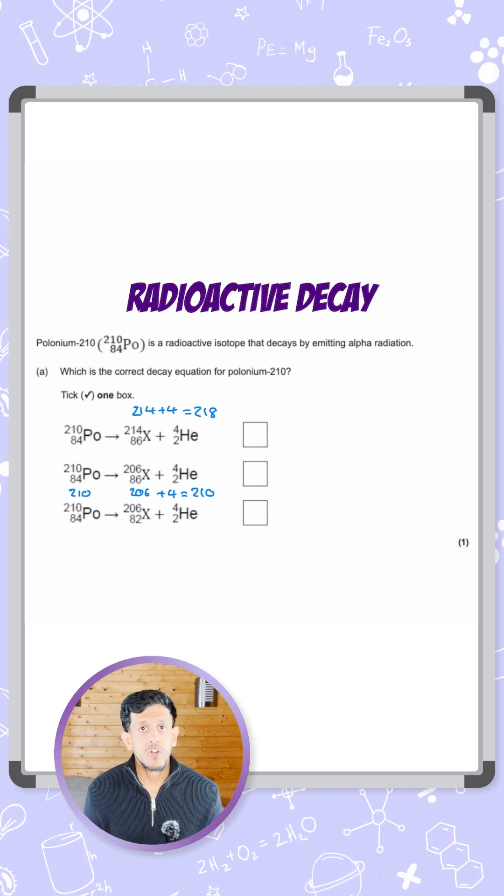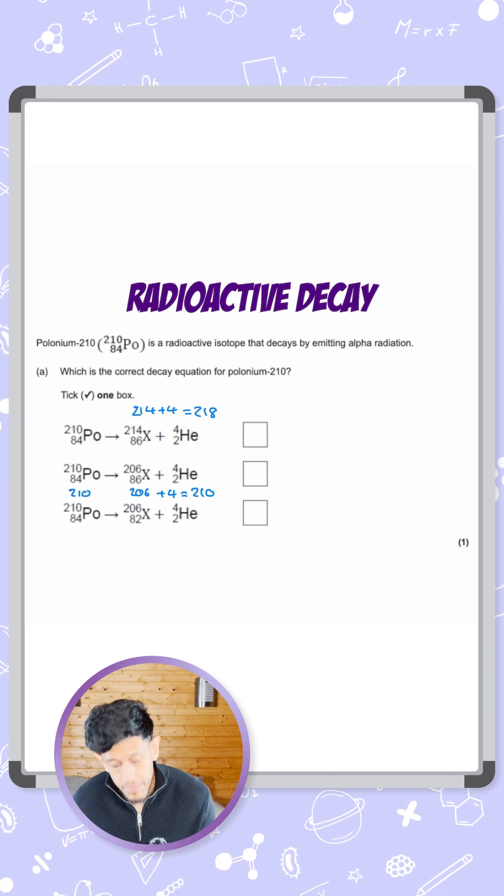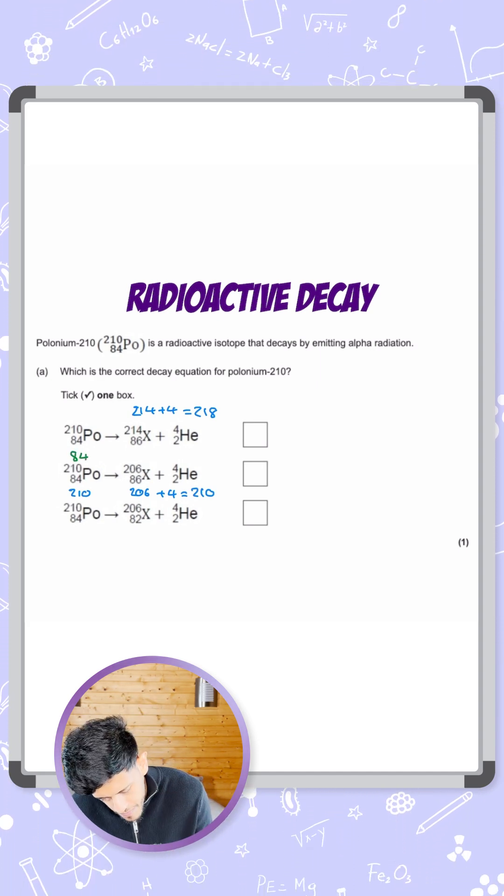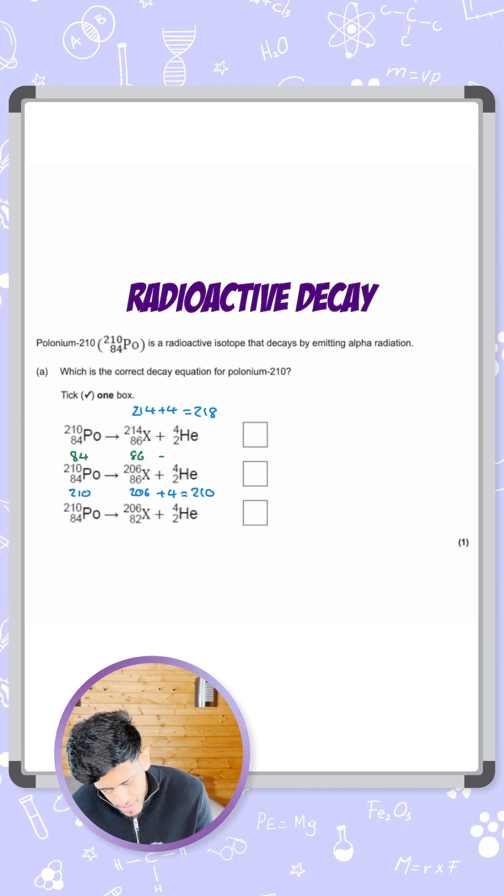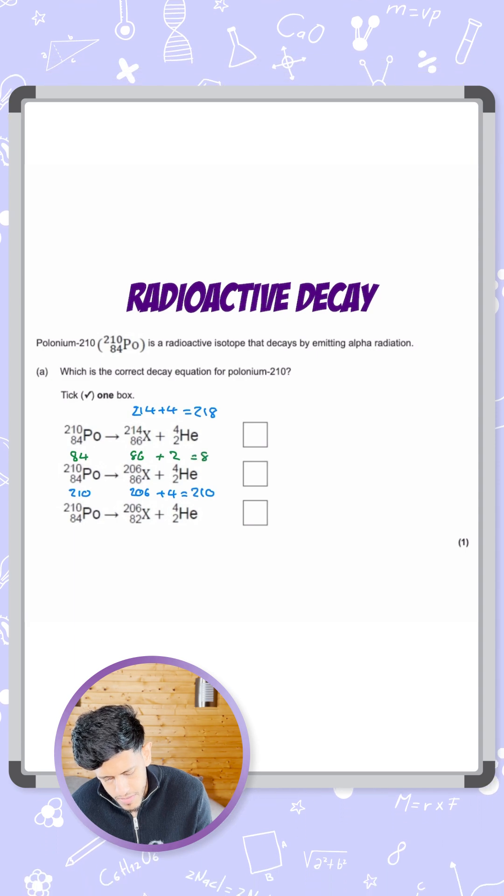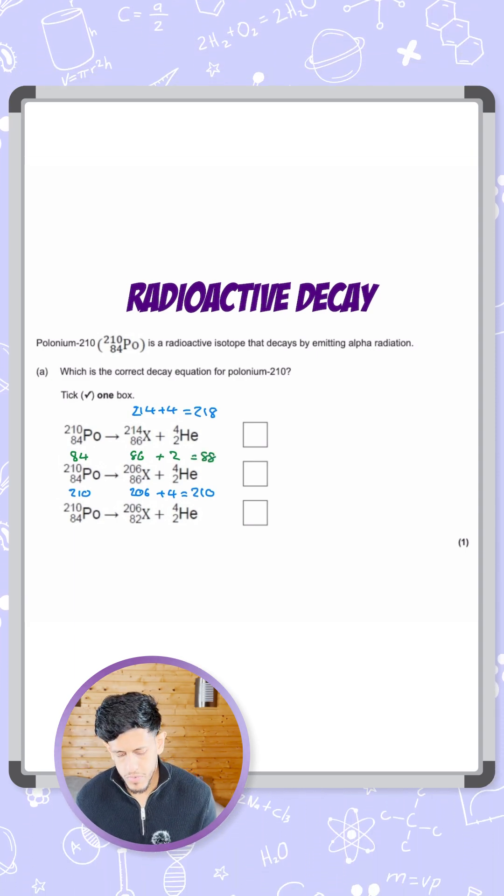I'll do it in green. So looking at the atomic number now, let's look at the middle equation: 84 to 86 plus 2, giving you 88. So 84 on the left, 88 on the right, there's no balance.